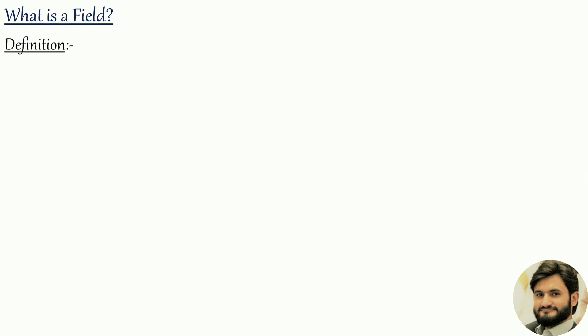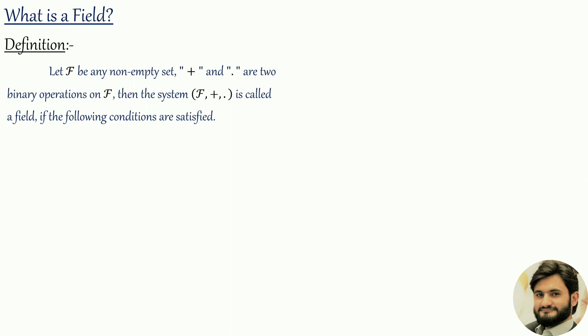Salaam alaikum. In this video lecture I am going to discuss about field — what is a field. Definition: Let f be any non-empty set. Addition and multiplication are two binary operations on f. Then the system f with binary operations addition and multiplication is called a field if the following conditions are satisfied.